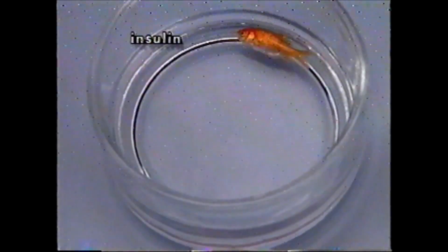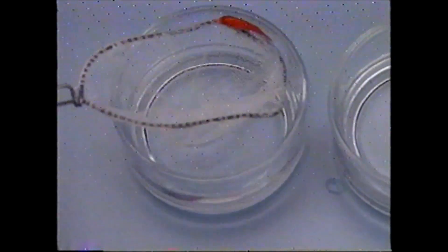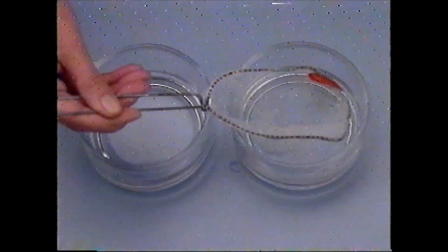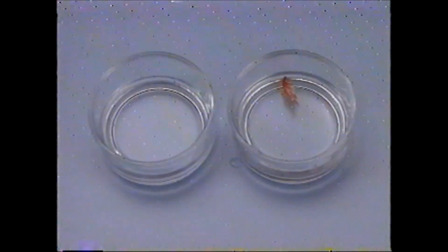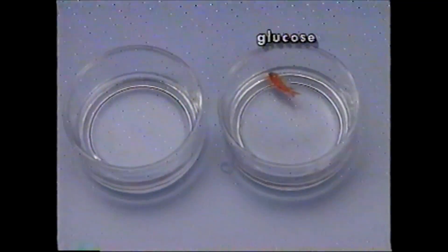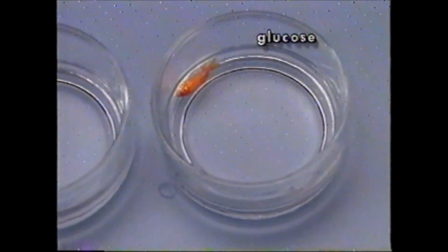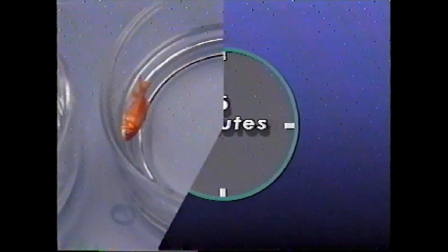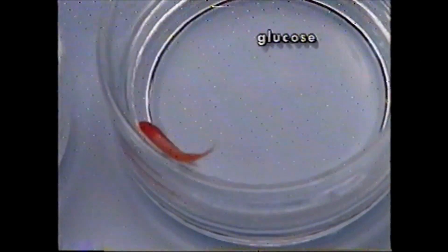The comatose fish is then carefully transferred to bowl B containing the 10% glucose solution and again observed for changes. Within a few minutes, the fish begins to revive.